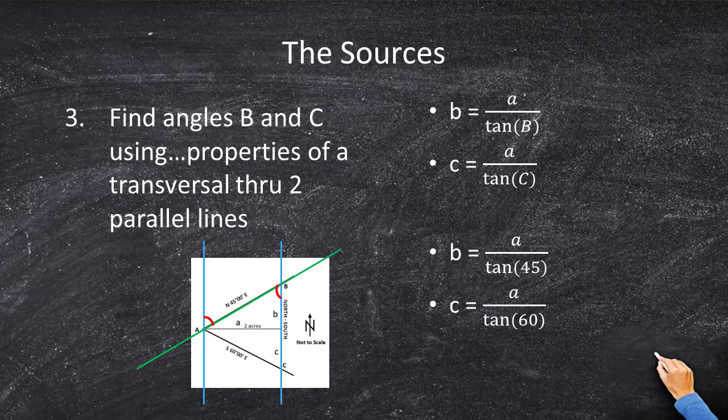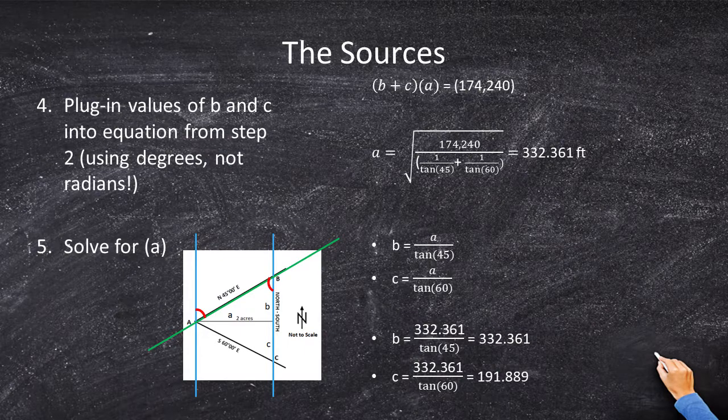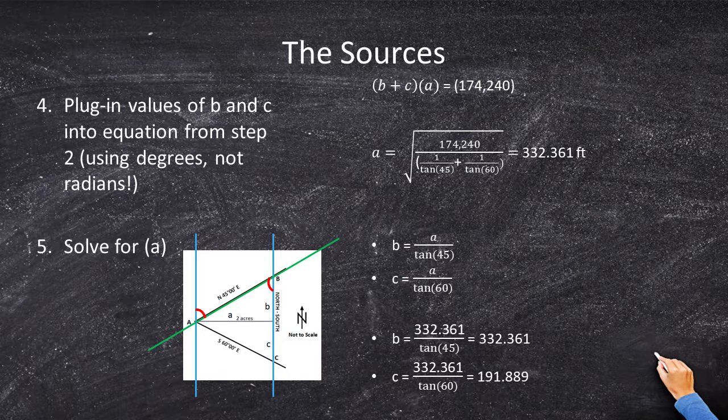We have the angle B and C, but we don't have the distance of a. And if we don't have the distance of a, we can't find the distance of b or c either. So we have two missing variables. In each equation, missing a and missing b, and also missing a and missing c. What do we do? We're going to have to set this b and c equal to each other and solve for a.